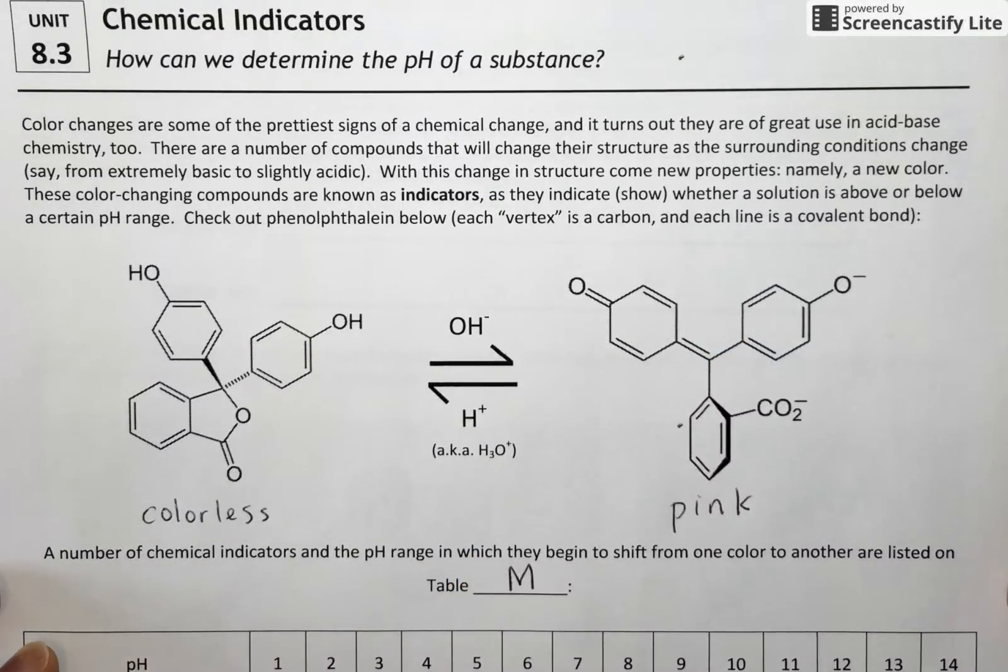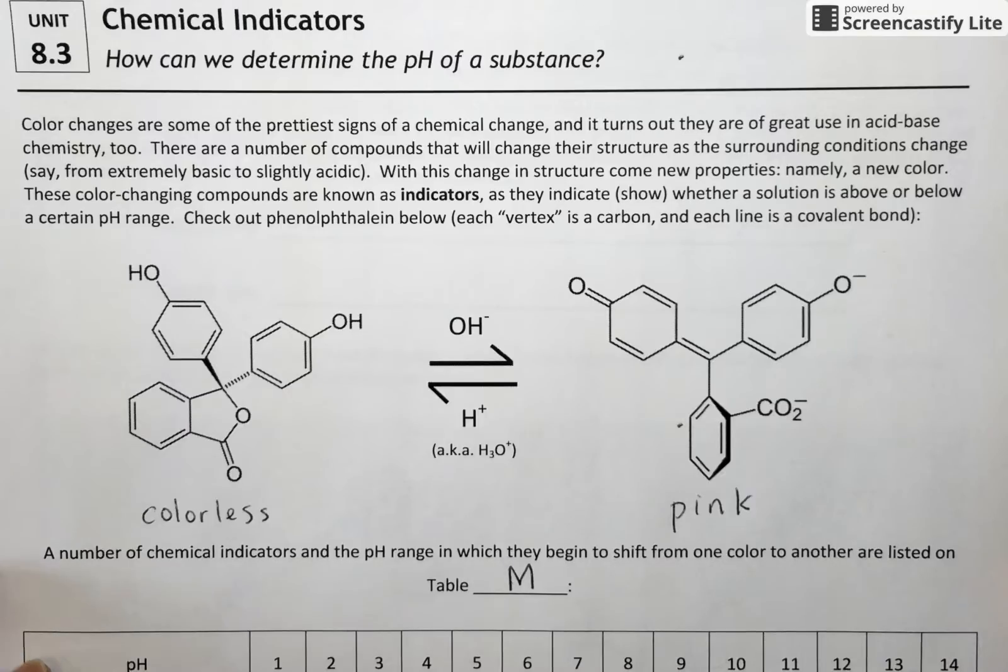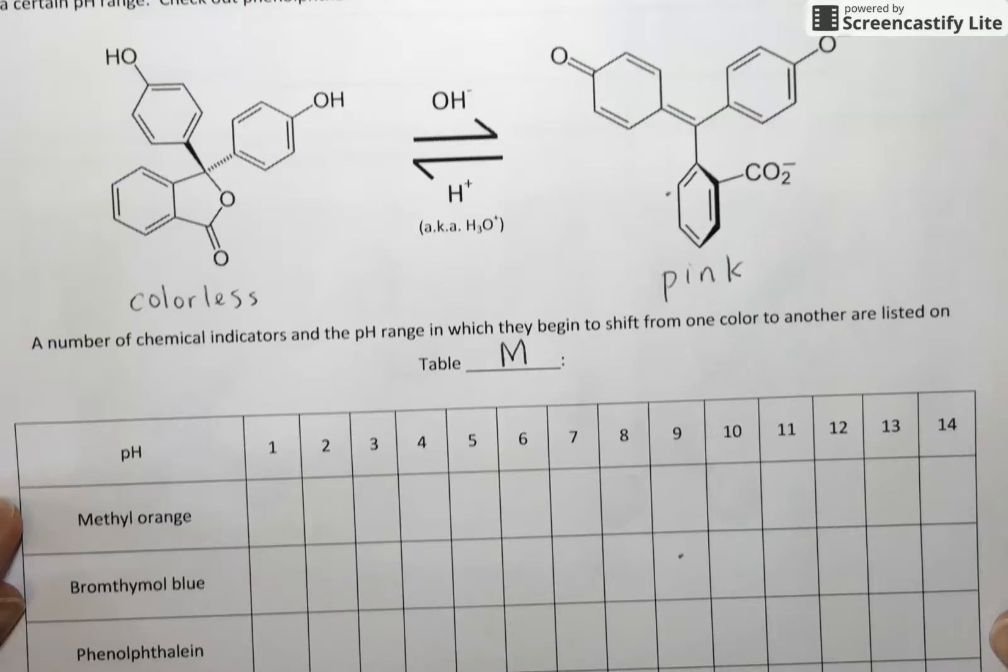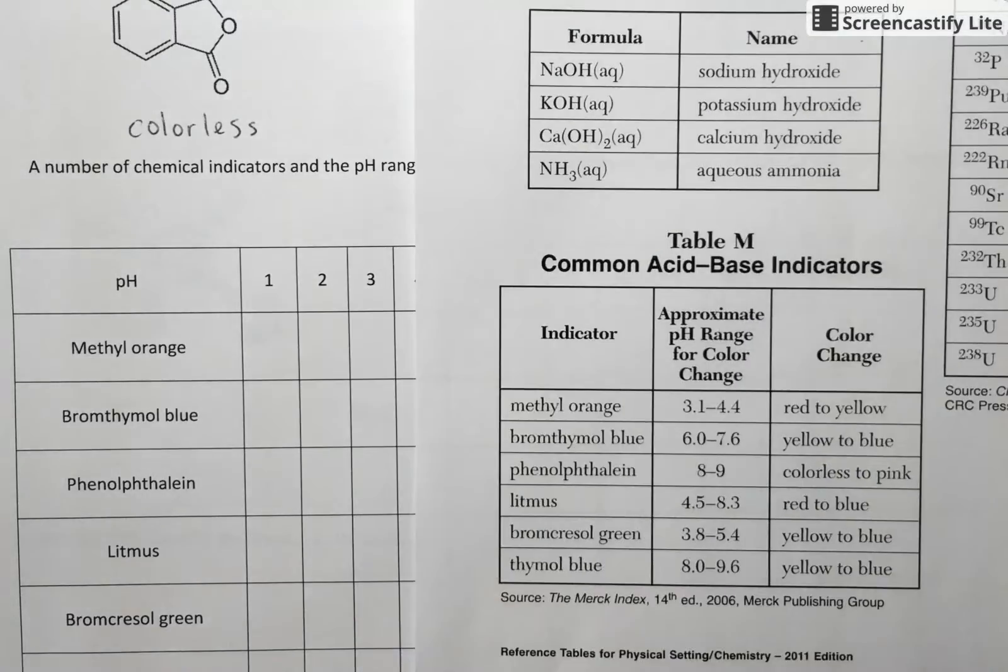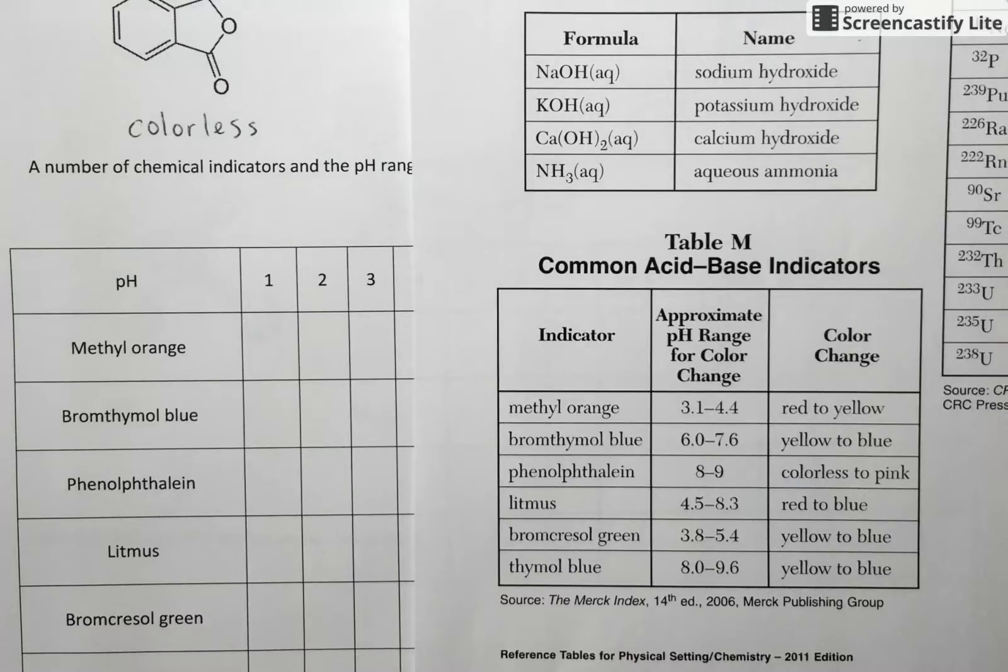So we're going to go through and try and figure out how this is used and how we can use color changes to help us figure out pHs of solutions. So I'm going to have table M over here to the side. We're going to look at all six of these different indicators and use them as examples to figure out what this reference table is trying to tell us.